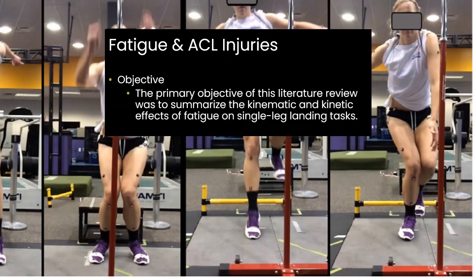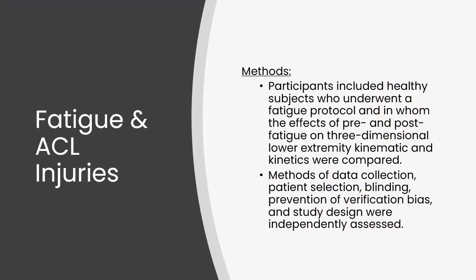When it comes to ACL injuries, one of the biggest variables is change of direction, where athletes most commonly get injured when pivoting — you see excessive valgus or the foot locks onto the turf and doesn't rotate, sending all ground forces directly to the knee, resulting in an ACL sprain, tear, or rupture. However, this study focused not on change of direction but on single leg landing mechanics. The objective was to review literature summarizing the kinematic and kinetic effects of fatigue on single leg landing tasks, as shown in the image of the volleyball player demonstrating significant valgus on both double and single leg landings.